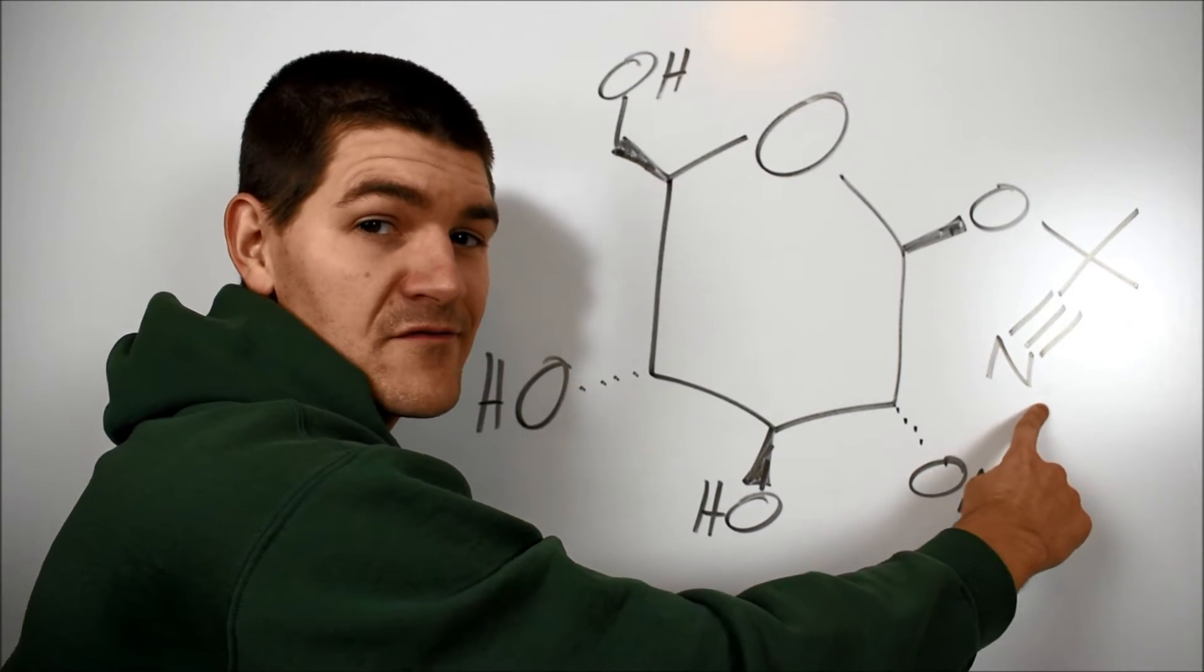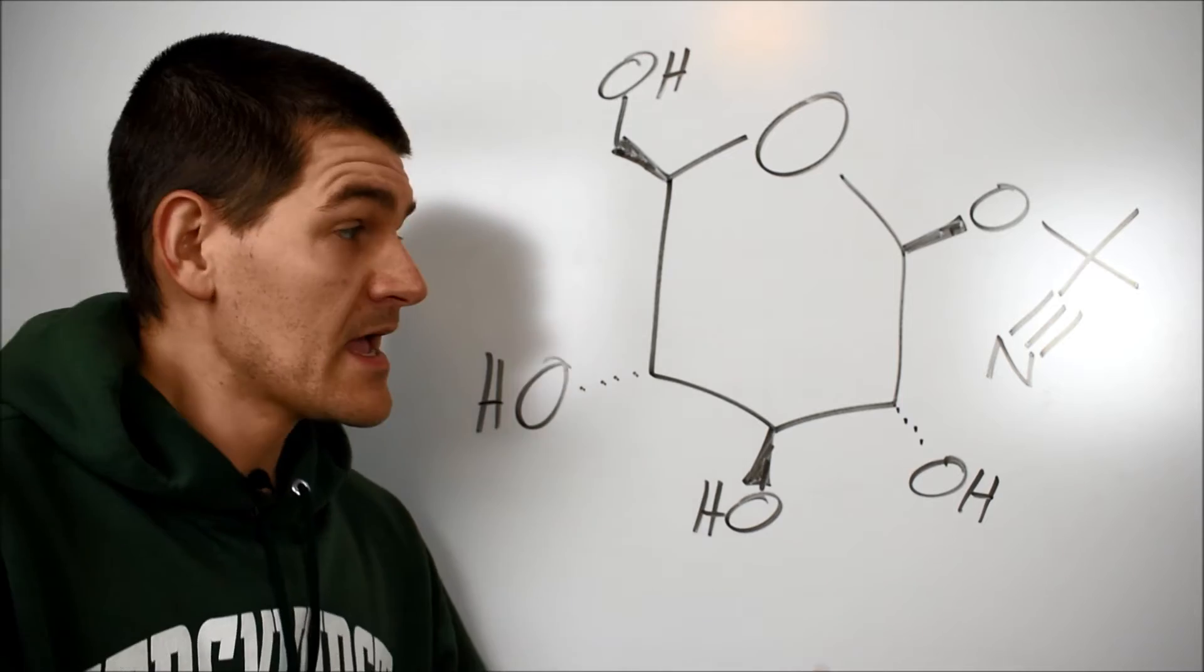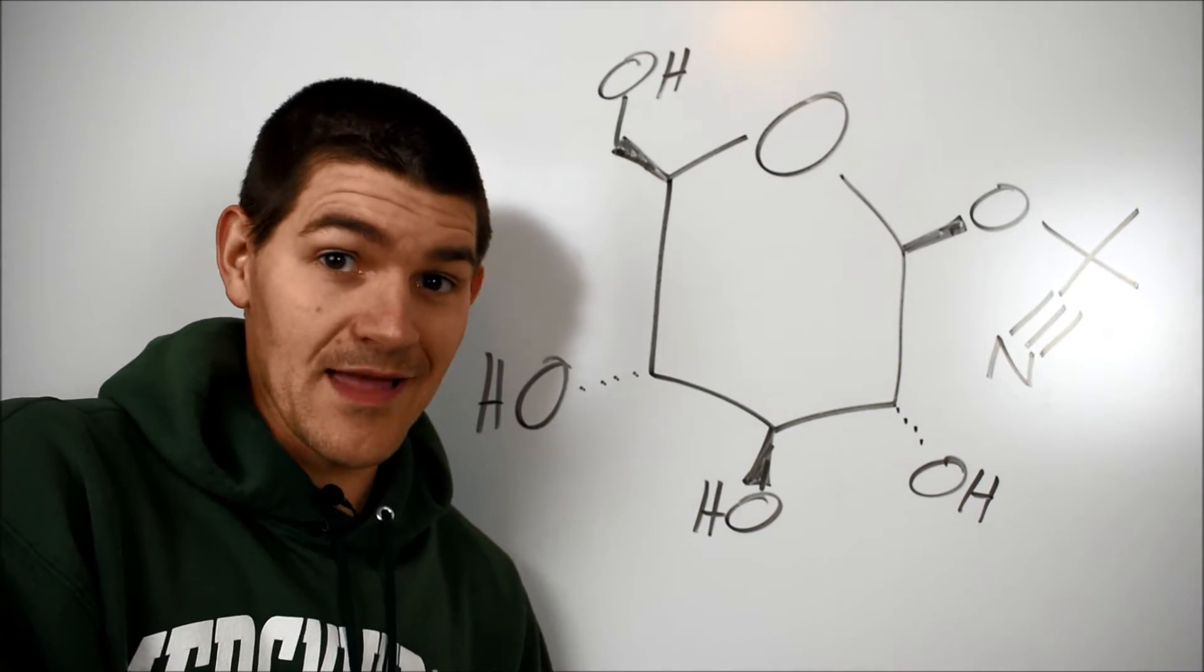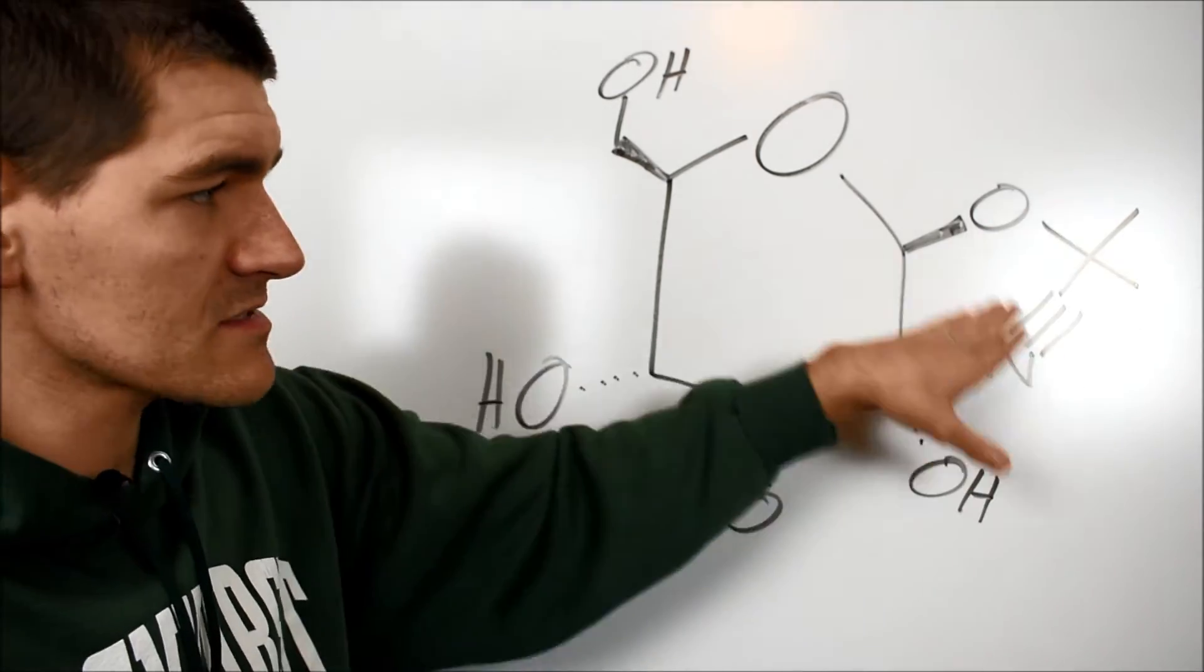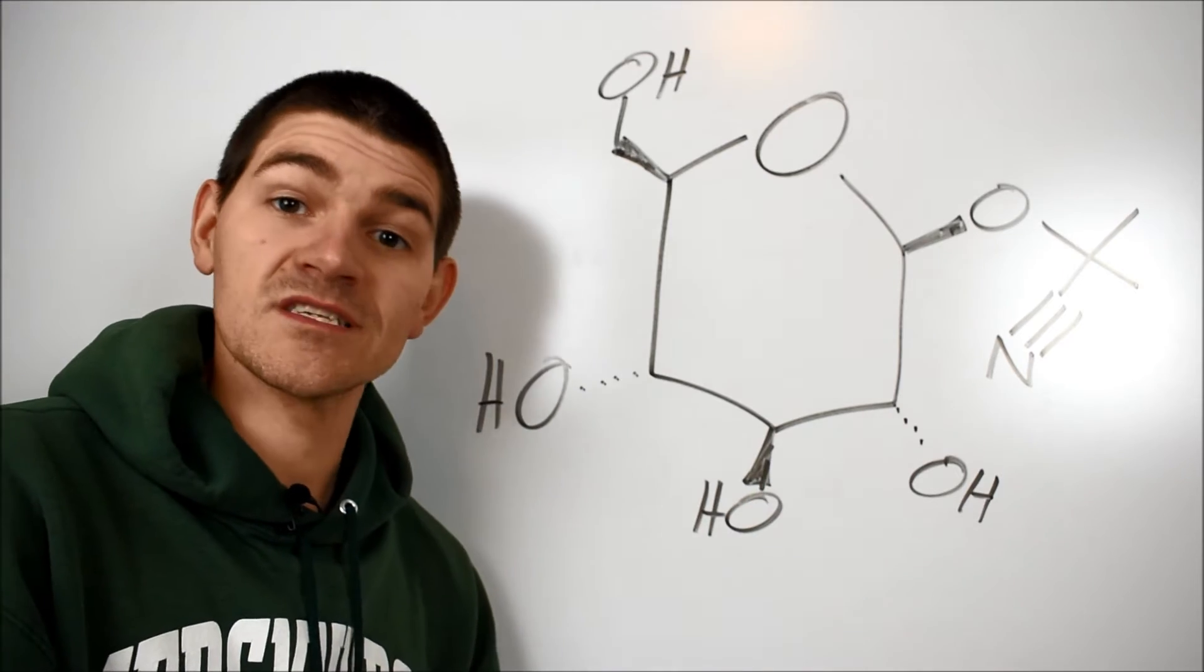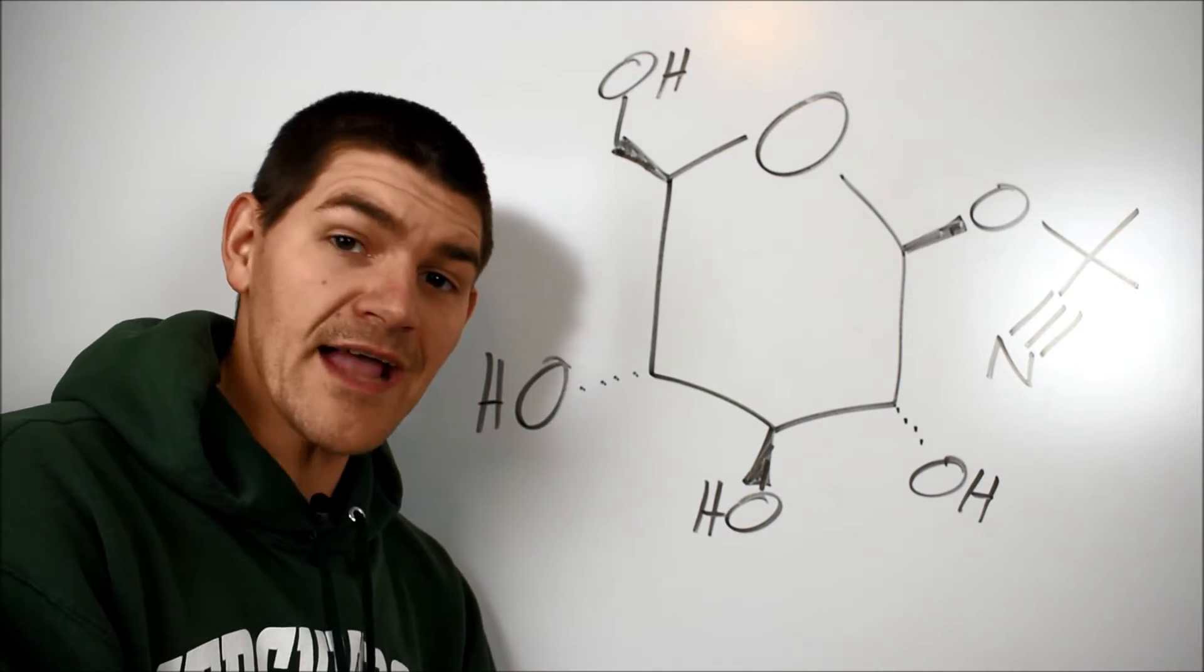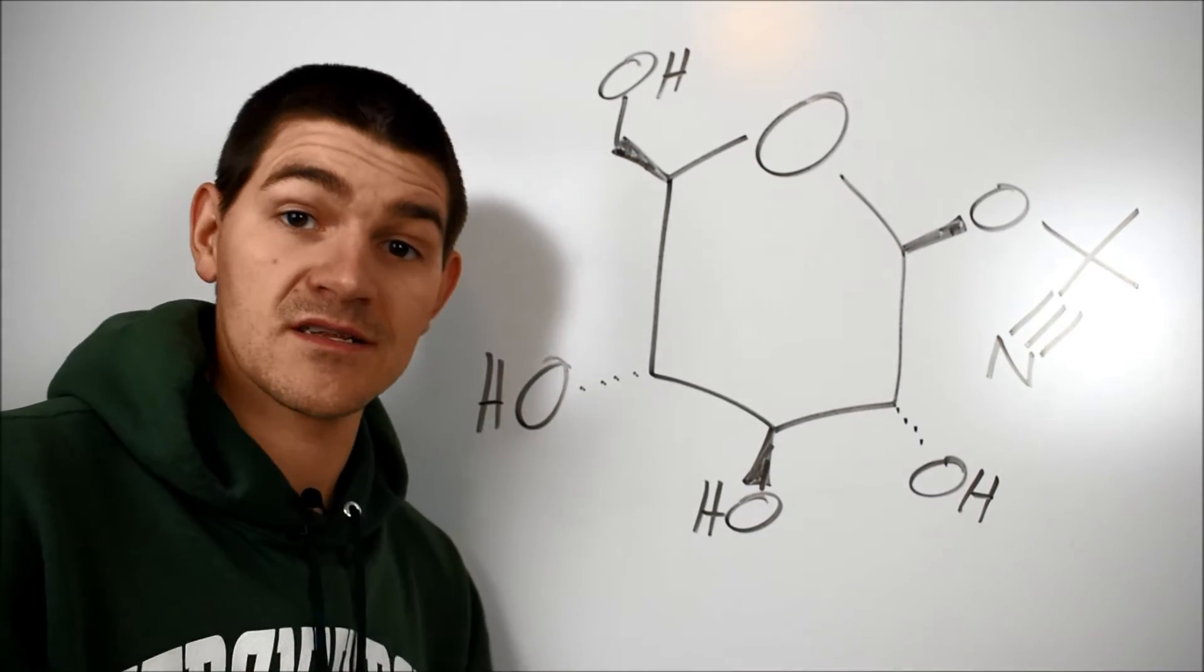This C triple bond N functionality is called a nitrile group, or cyano, same exact thing. In the cassava, a creatively named enzyme called linamarase breaks down our linamarin into glucose and this molecule over here. We break the oxygen right here and we create acetone cyanohydrin. The cyanohydrin group is just a carbon that has both a nitrile group and a hydroxy on it.